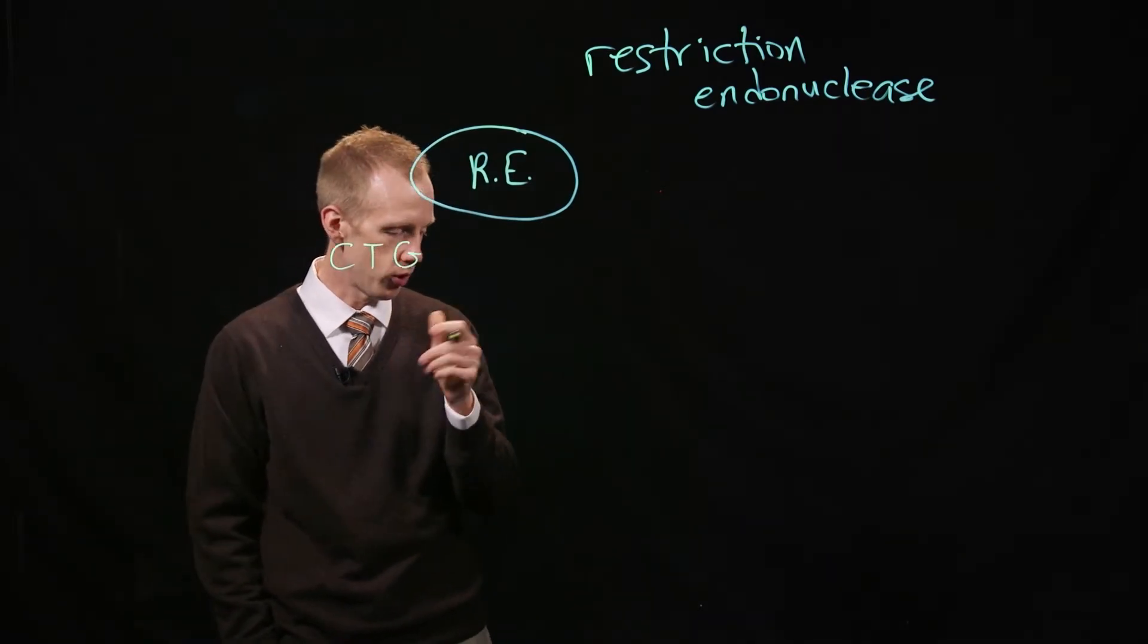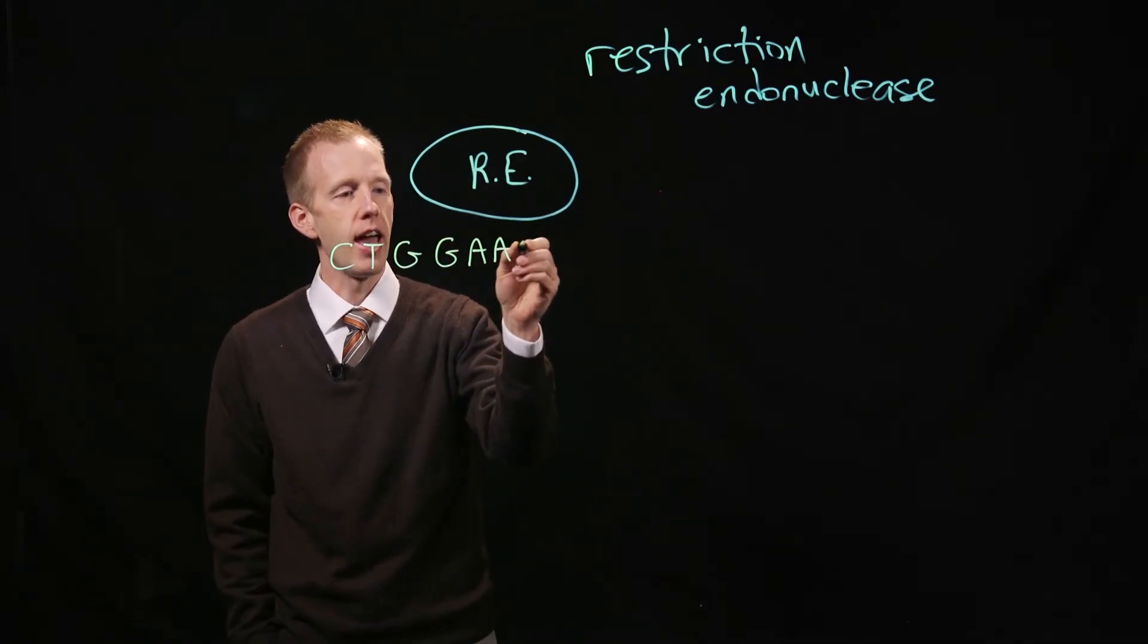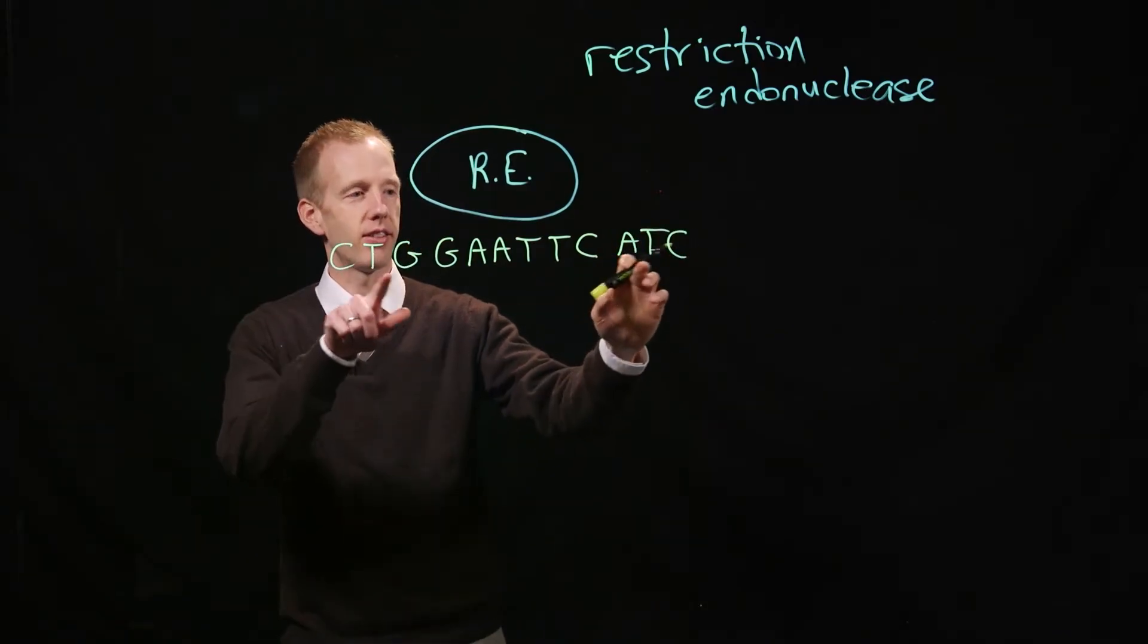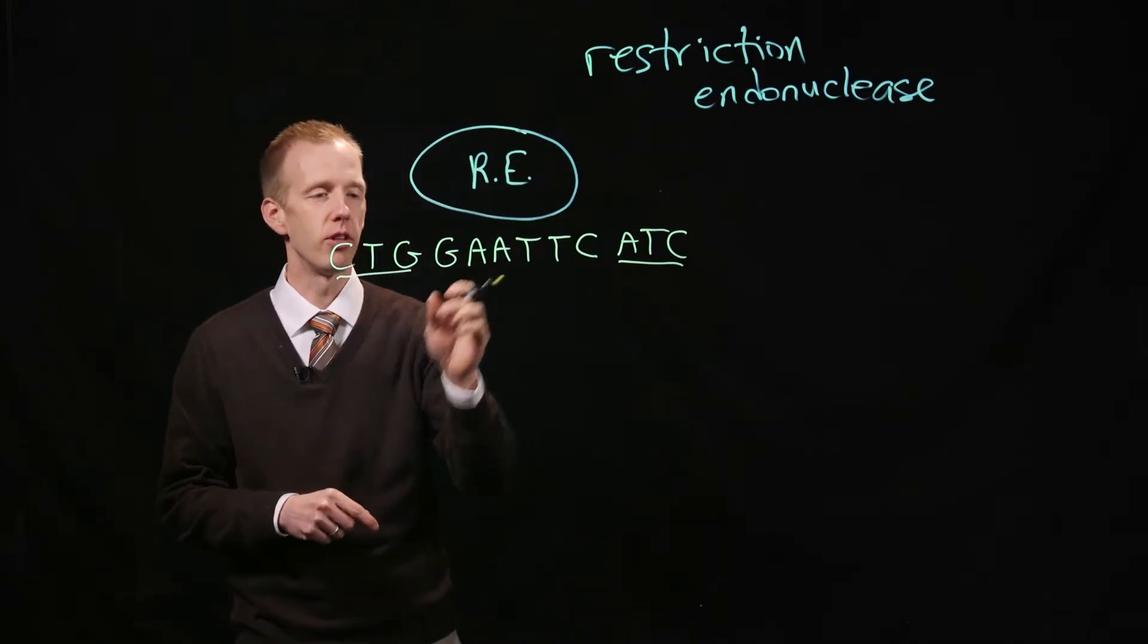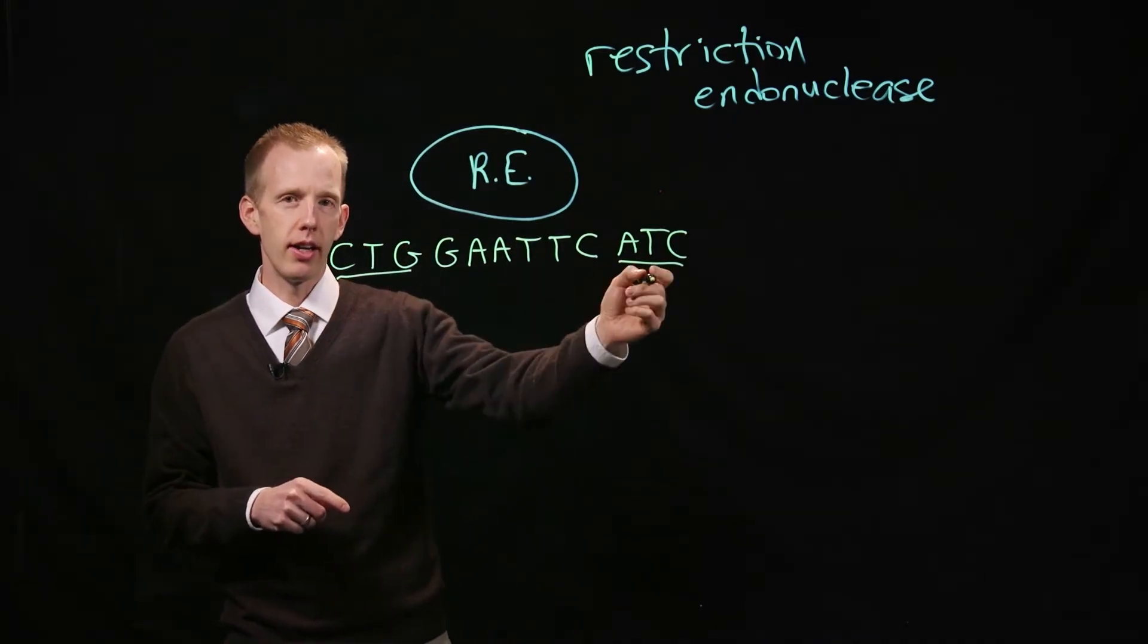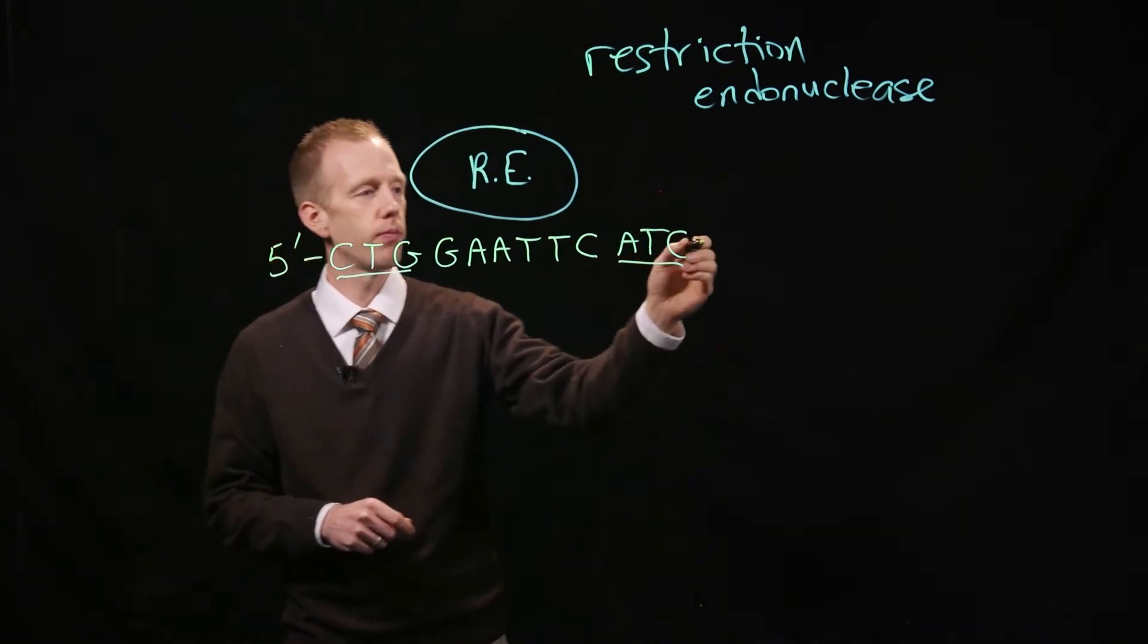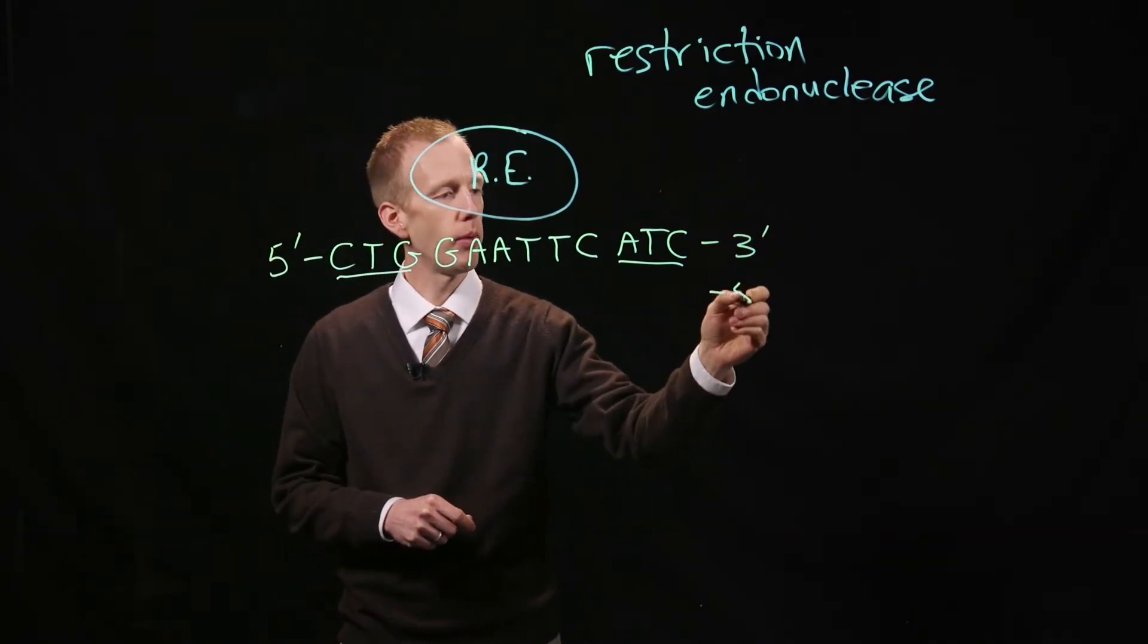We might have a restriction enzyme that recognizes the sequence G-A-A-T-T-C. I'm writing some excess DNA sequence here outside of the recognition sequence. Remember that when I write a DNA sequence from left to right, this is the five prime end and this is the three prime end.